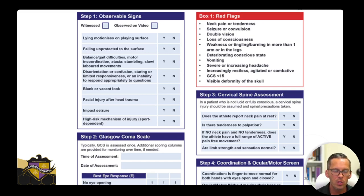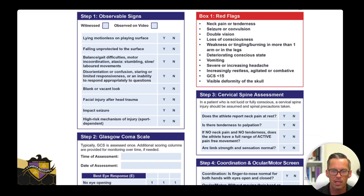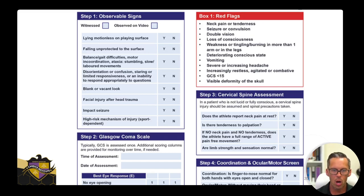The observable signs on the SCAT-6 include: lying motionless on a plain surface, falling unprotected onto a surface, balance or gait difficulties, motor incoordination or ataxia, stumbling, slow labored movement, disorientation and confusion, staring, limited responsiveness, inability to respond appropriately to questions, blank or vacant stare, facial injury after head trauma, impact seizures, or a high-risk mechanism of injury that's sport dependent — such as hitting your head on a diving board. The Glasgow Coma Scale also needs to be administered, covering eye-opening, verbal responses, and motor responses — adding each component together to get the total Glasgow score.